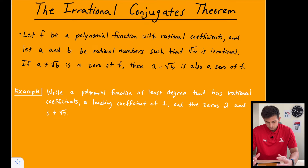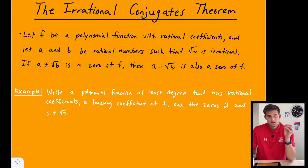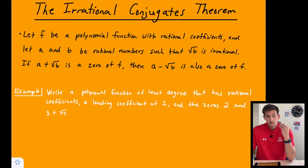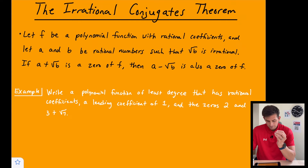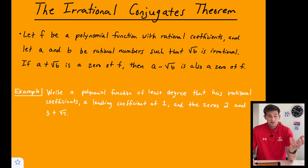The conjugate is a number like a plus the square root of b — the square root of a non-perfect square. The conjugate would be a minus the square root of b instead of a plus. It is irrational because we have the square root of a non-perfect square.